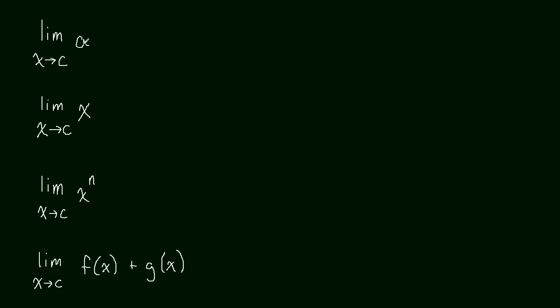Okay, so the limit as X approaches C of A. So this is C and A are both constants, they're just numbers. Well, if X is approaching C, A is a constant, it's not going anywhere. So this is just A. Let me give you now a concrete example of that. So this will be, let's do the limit as X approaches 10 of 2. Well, it doesn't matter where X is going, 2 is just always 2. So this is equal to just 2.